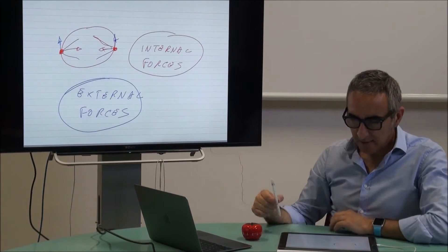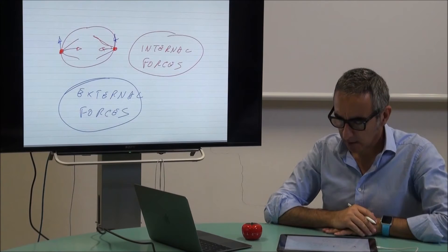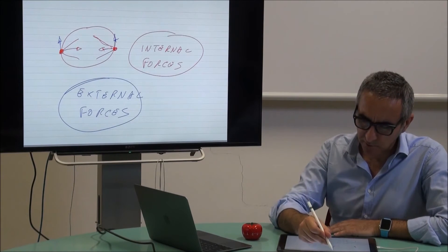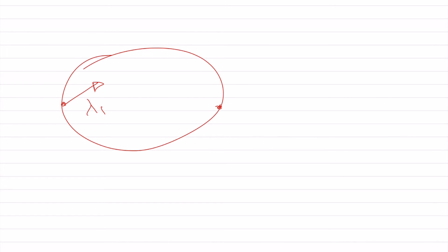Considering the forces applied at the contact points of the object with two contact points, we call these λ1 and λ2. Both λ1 and λ2 belong to R³, so they are three-dimensional contact forces. This depends on the model of the contact, but in this part of the lecture we assume these two forces belong to R³.